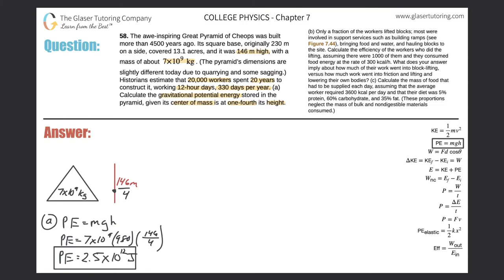Let's take a look at letter B. Only a fraction of the workers lifted blocks; most were involved in support services such as building ramps, bringing food and water, and holding blocks to the site. Calculate the efficiency of the workers who did the lifting, assuming there were 1,000 of them and they consumed food energy at the rate of 300 kilocalories per hour. What does your answer imply about how much of their work went into block lifting versus friction lifting and lowering the bodies?